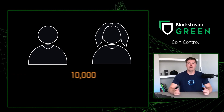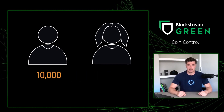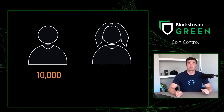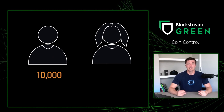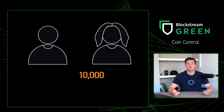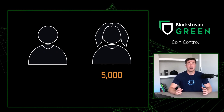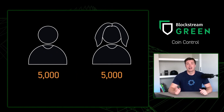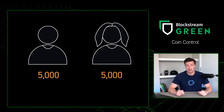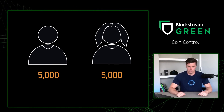Now, what happens if Bob only wants to pay Alice 5,000 sats? Bob receives 10,000 sats from work in one input. Later in the week, he goes to pay Alice 5,000 sats. Well, Bob's wallet sends the whole 10,000 sats, Alice receives 5,000 sats, and then Bob receives 5,000 sats back to his wallet.